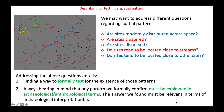We may be faced with different types of spatial patterns. This slide lists some of them. For instance, if we think about archaeological sites dispersion over a given area, sites can be randomly distributed, clustered, dispersed, or located close to natural features or to other sites.